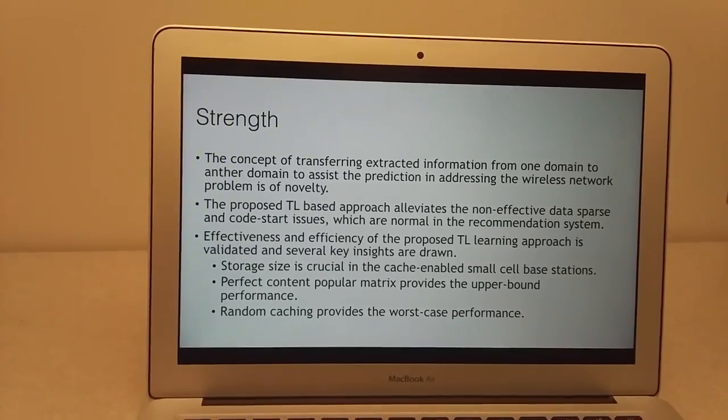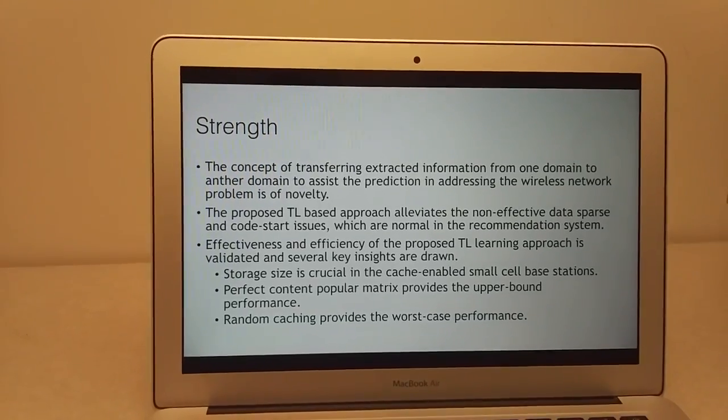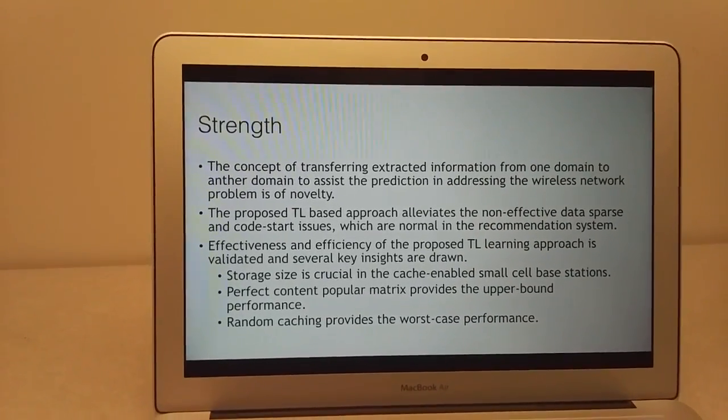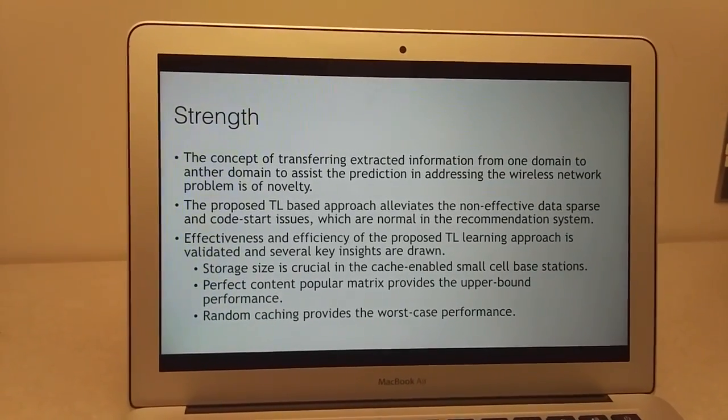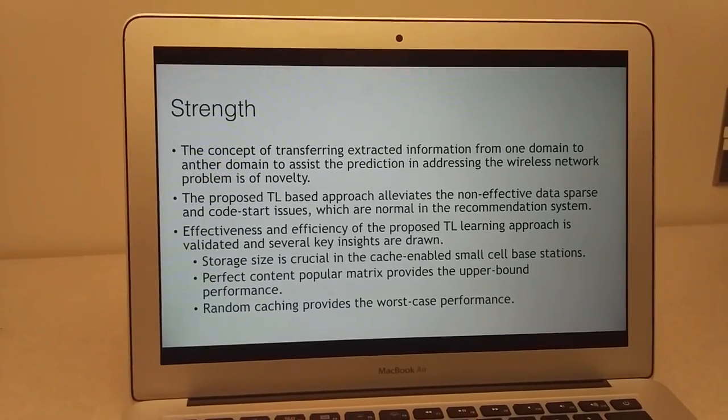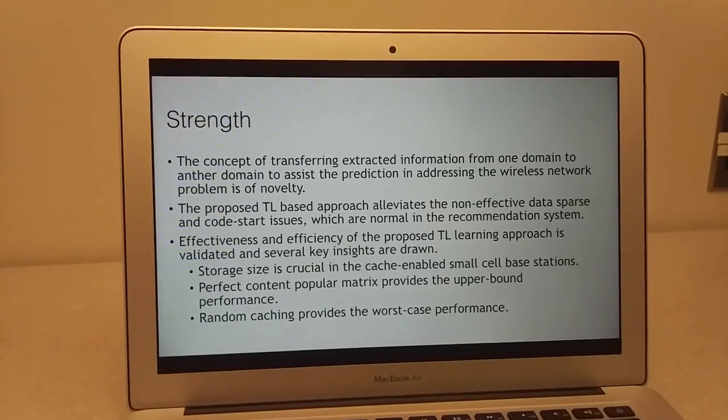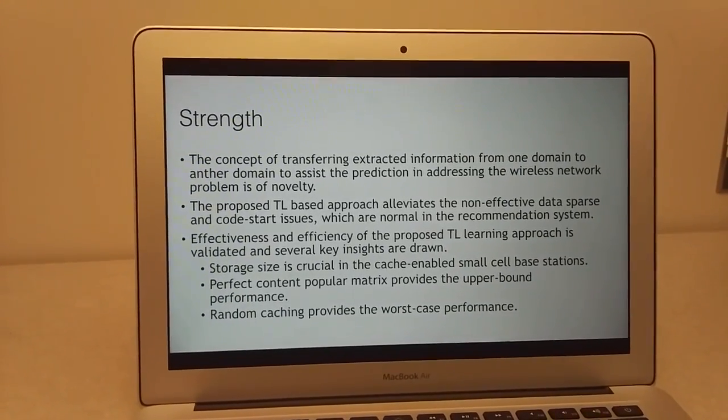First, the storage size for the small cell base station is crucial in the cache-enabled network. Second, the perfect content popularity matrix and the random caching provide the upper bound and worst case performance respectively.